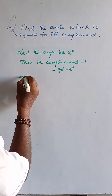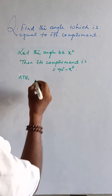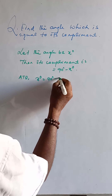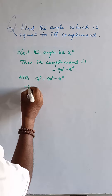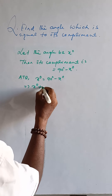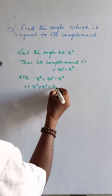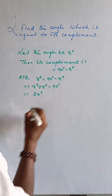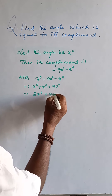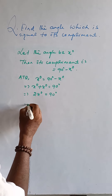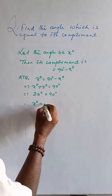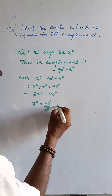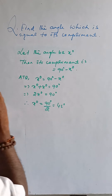According to the question, x degrees is equal to 90 degrees minus x degrees. Then x degrees plus x degrees is equal to 90 degrees. So 2x degrees is equal to 90 degrees, and x degrees is equal to 90 degrees divided by 2, that is 45 degrees.